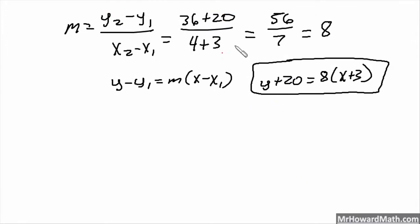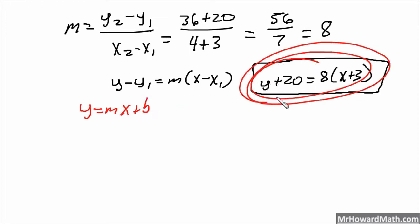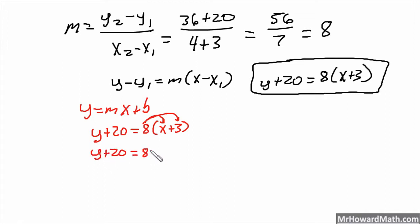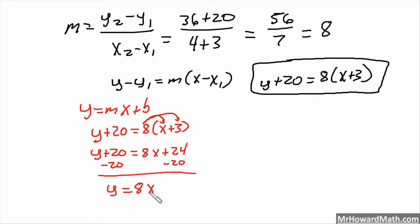Now we need to write it in slope-intercept. So y equals mx plus b with slope-intercept, that means y by itself. Starting with point-slope: y plus 20 equals 8 times the quantity x plus 3. Distribute first: y plus 20 equals 8x plus 24. Subtract the 20. Finally, y equals 8x plus 4. So that would be my slope-intercept form, the y equals mx plus b.